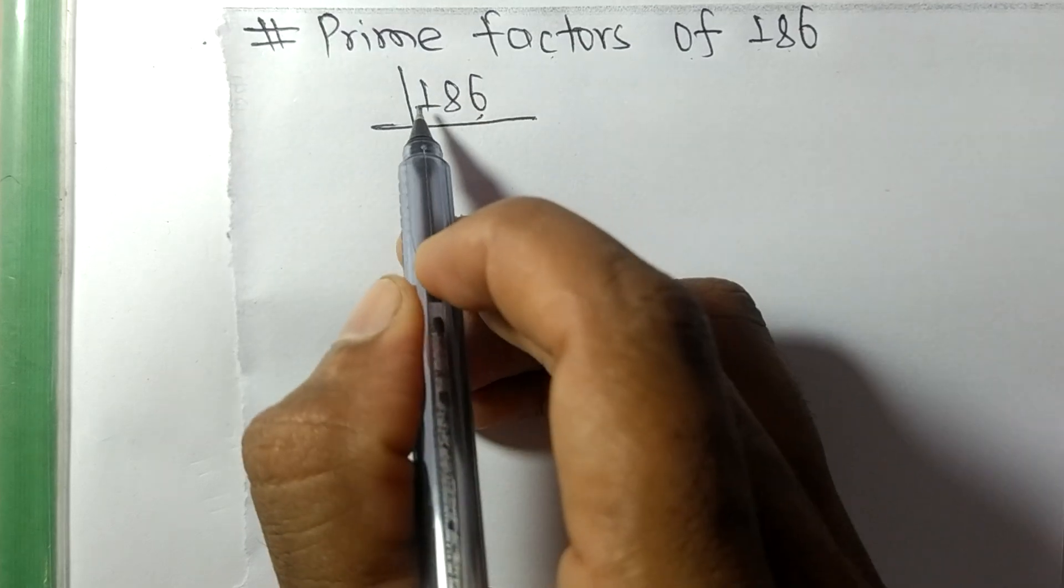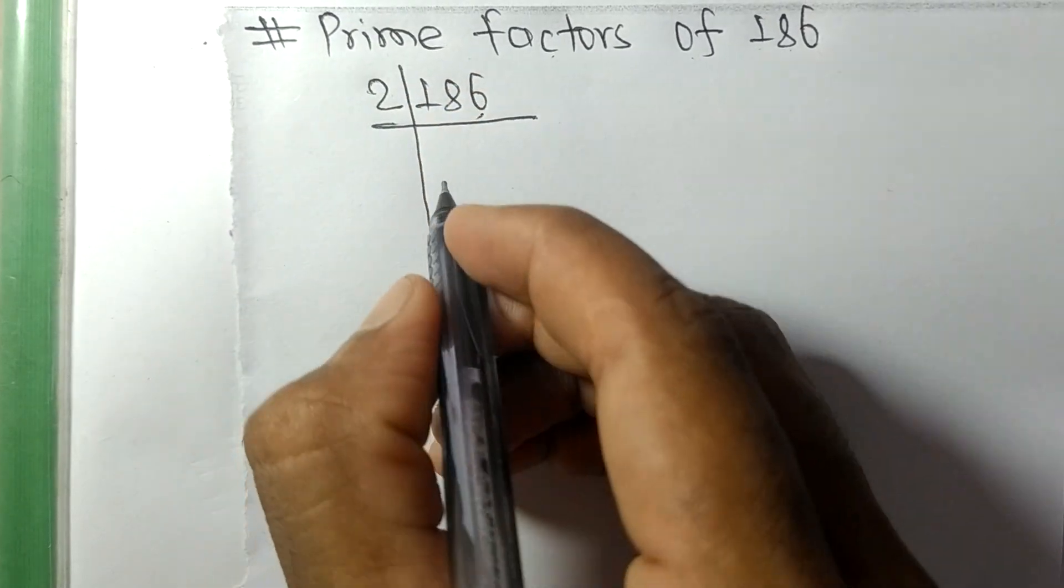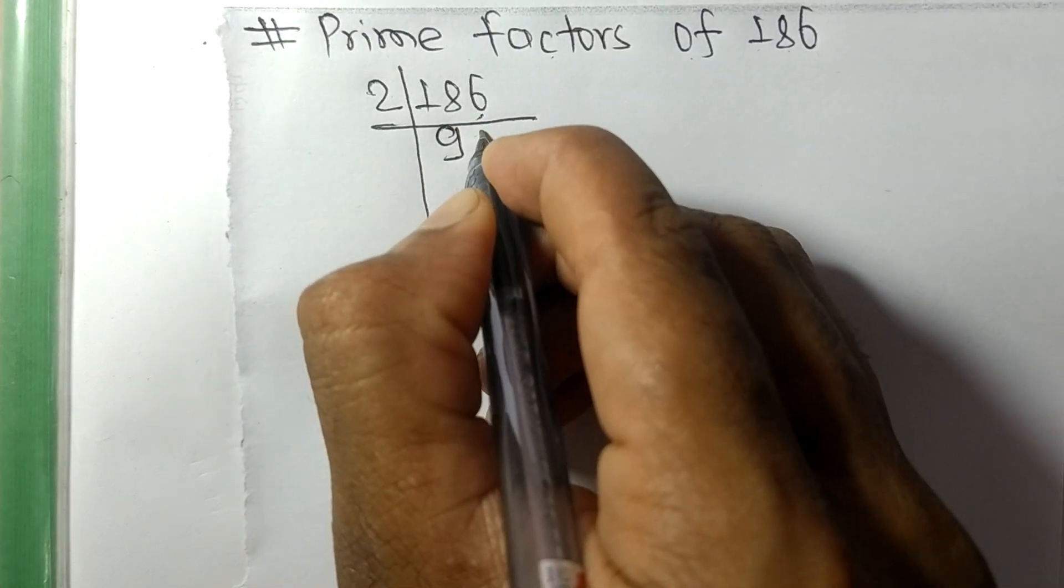It contains an even number 6, so this whole number is divisible by 2. So 2 times 9 is 18 and 2 times 3 is 6.